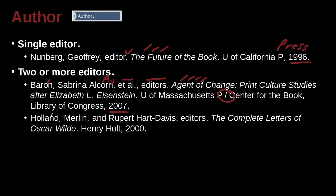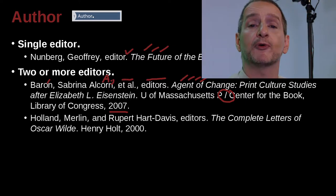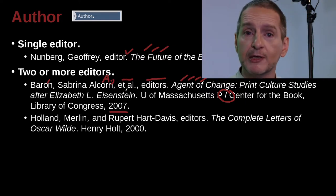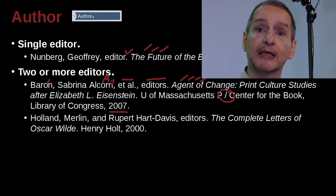Let's look at another example. Colin Merlin and Rupert Hart-Davis, editors. So what's this case? This case is two people. Remember: if we have one person, we must have the last and first name. If we have two people, we must have the whole name. If we have three people, we must use et al. In this case, what do we have? Just two people. So in MLA, if you have two people, you must list both people. Pay attention to how we write their names.